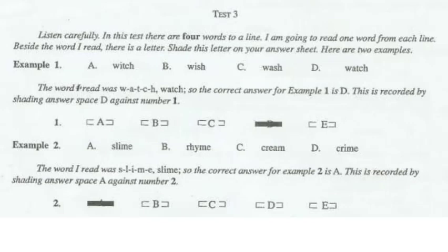Example 1. Watch. The word I read was W-A-T-C-H. Watch. So the correct answer for example 1 is D. This is recorded by shading answer space D against number 1. Example 2. Slime. The word I read was S-L-I-M-E. Slime. So the correct answer for example 2 is A. This is recorded by shading answer space A against number 2.